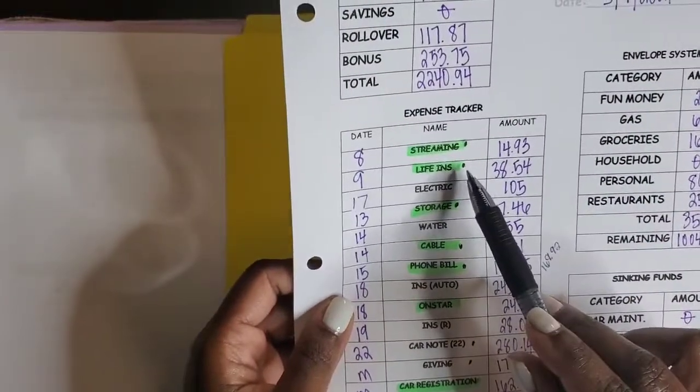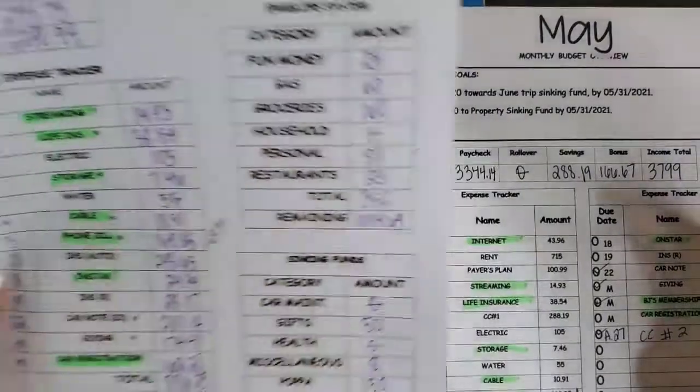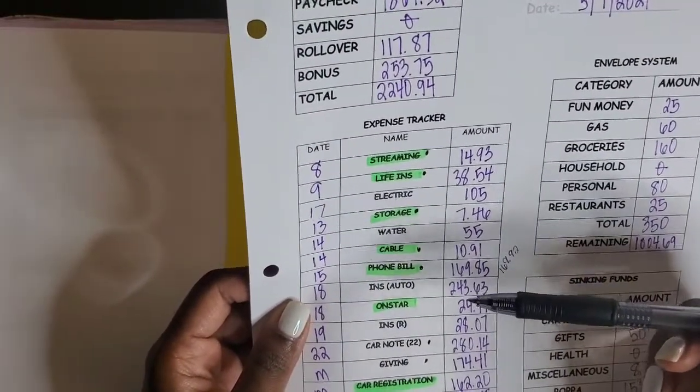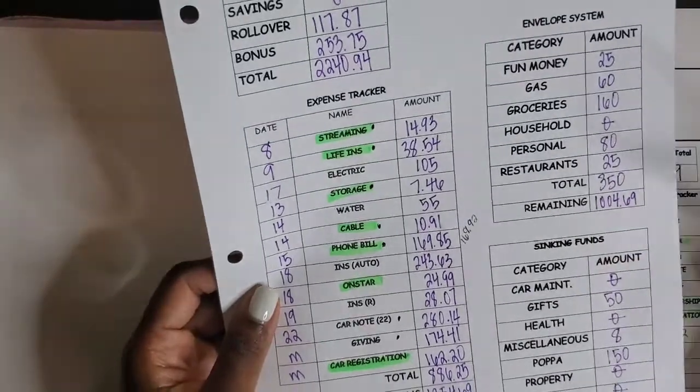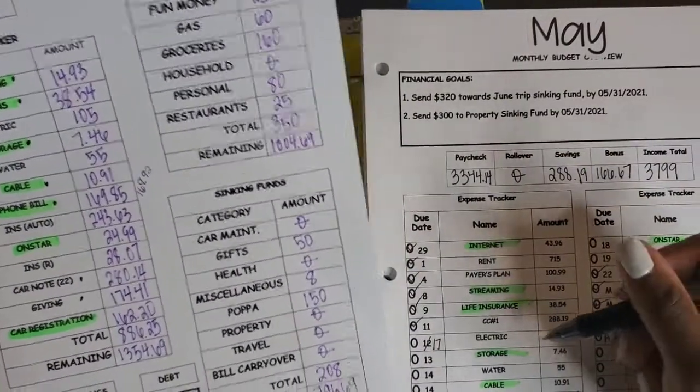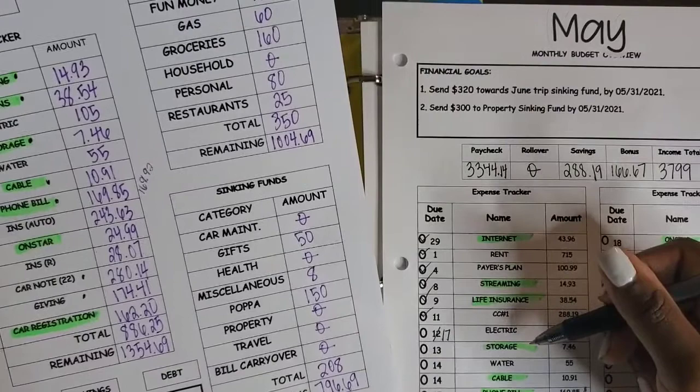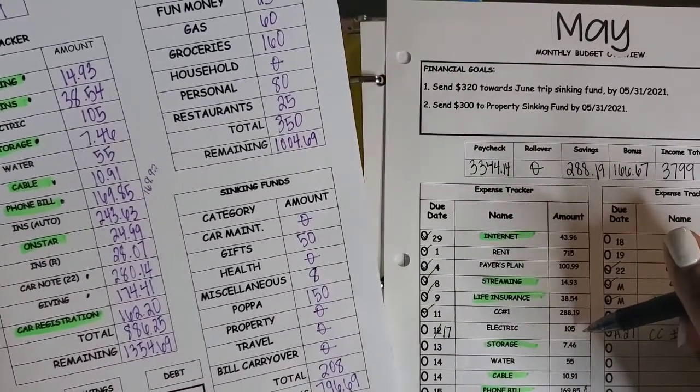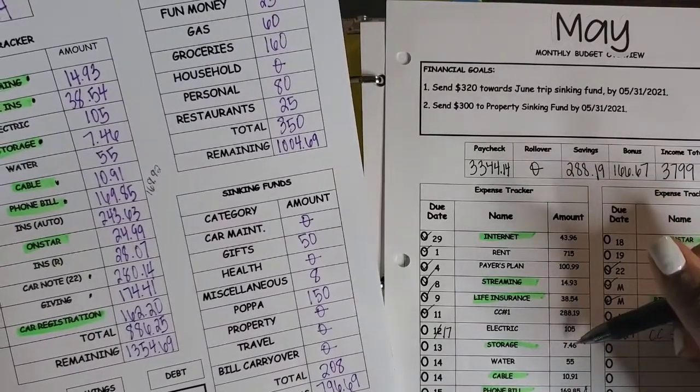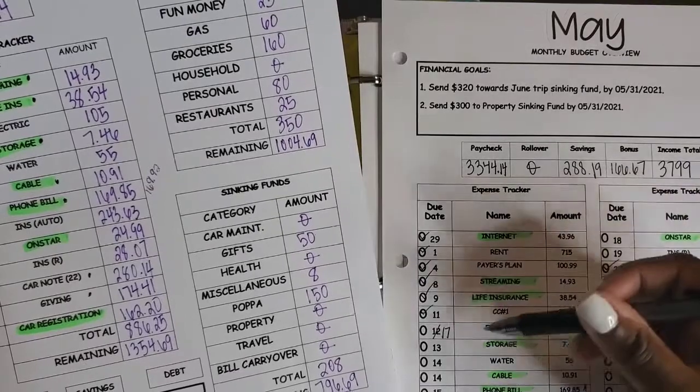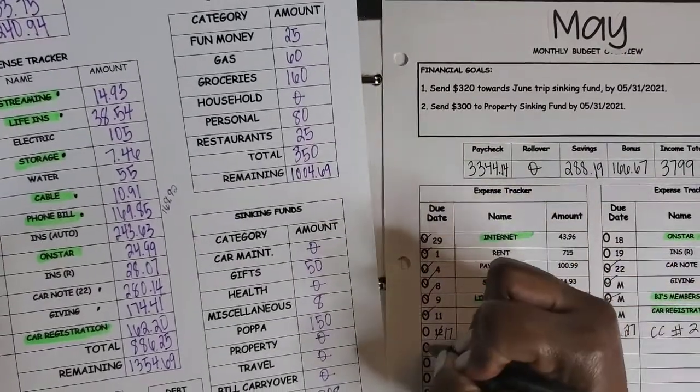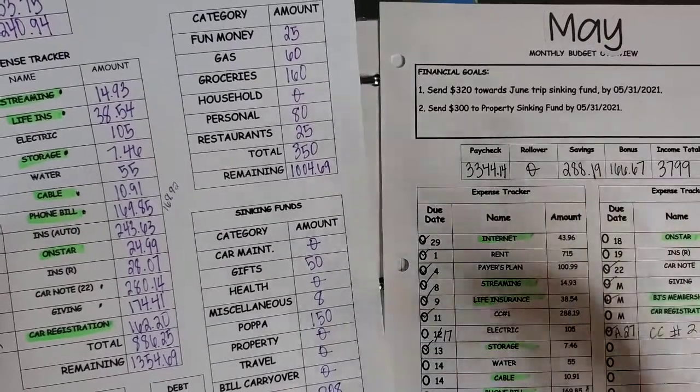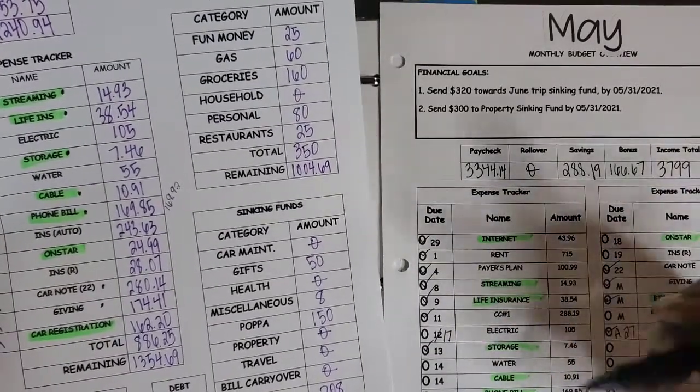So what I need to do is I need to look over my income breakdown number two to see exactly what bills have actually cleared my account because I need this when I do my check-in. So streaming has cleared my account as well as life insurance. And what I did is I put these little dots here because for some reason I was getting confused. Electric actually is not due until the 17th. That was one thing that I did have to check. I'm on the budget billing or equal payment plan. So the amount is always the same, but I never know what date it's going to be due.